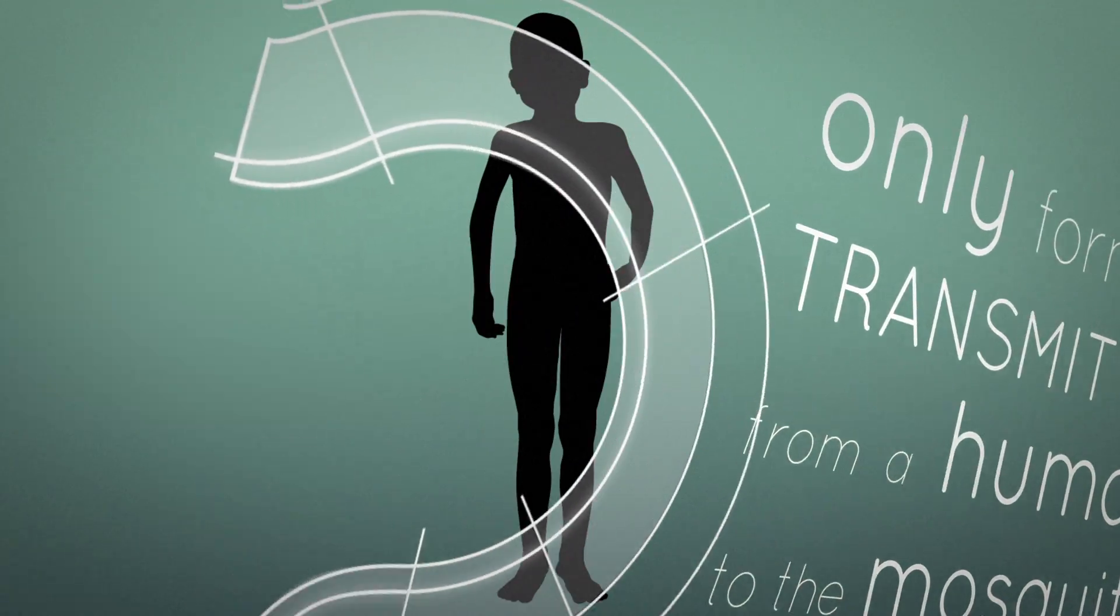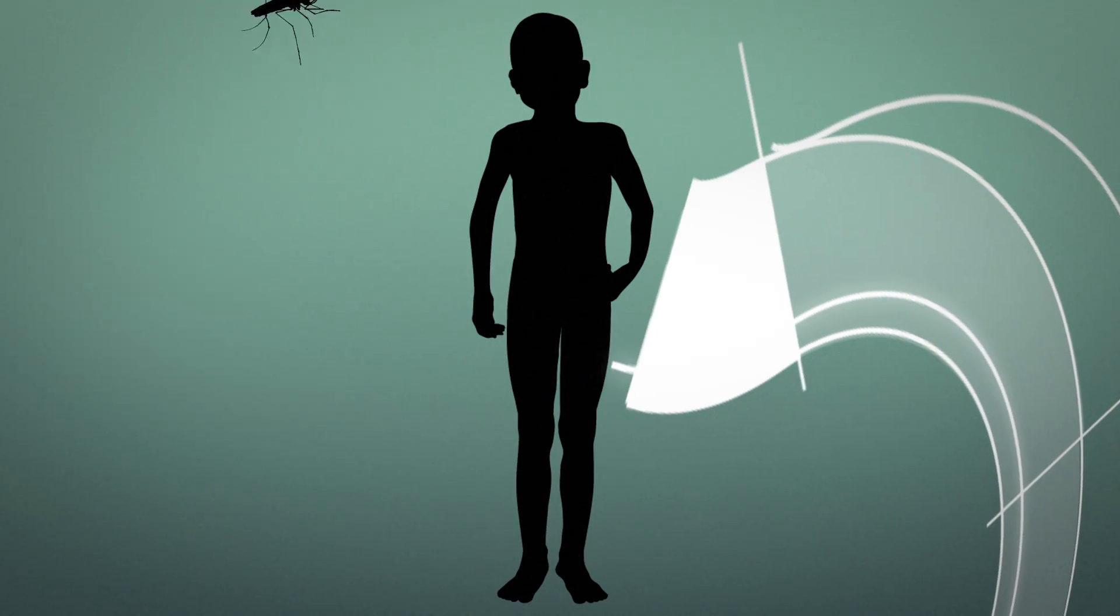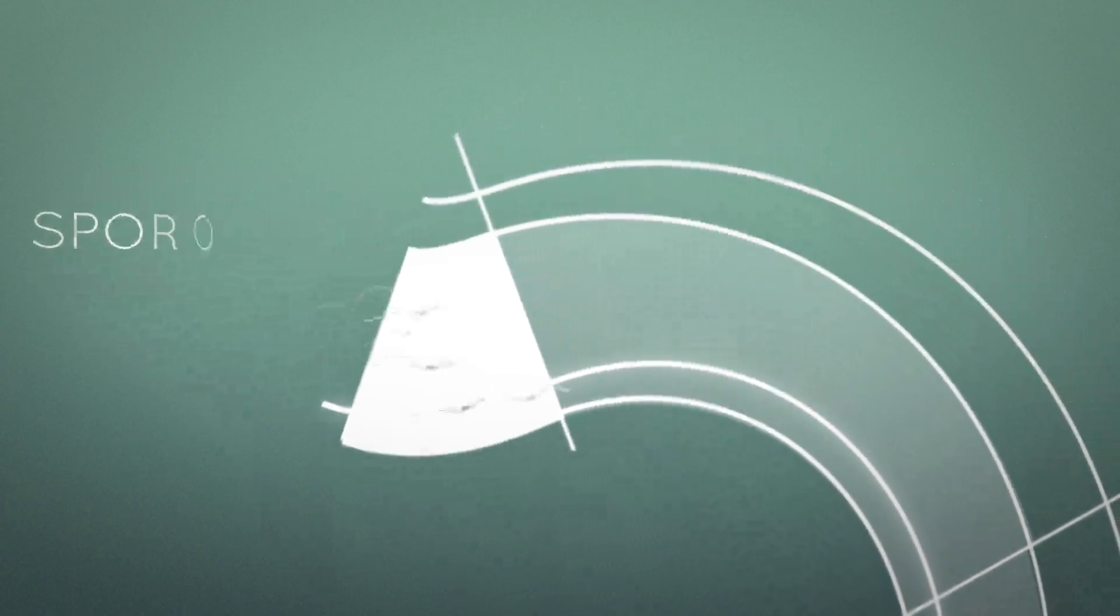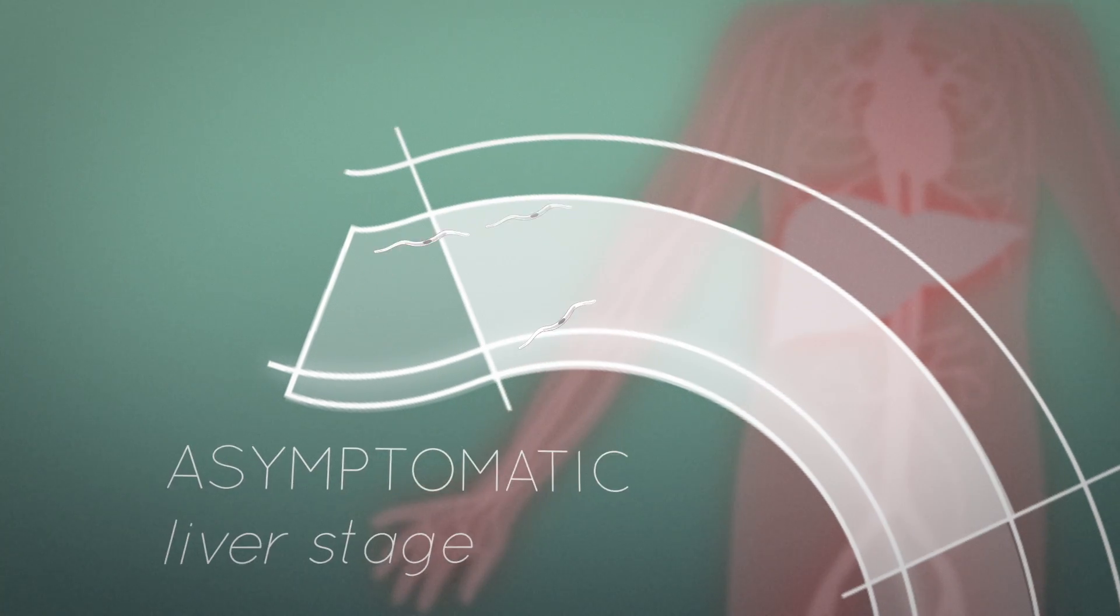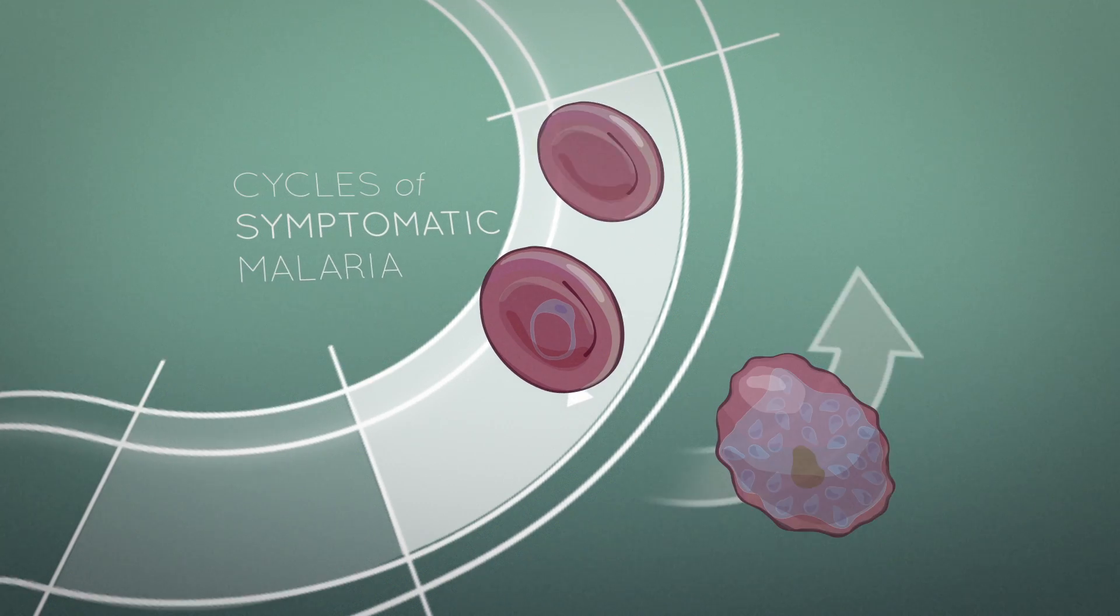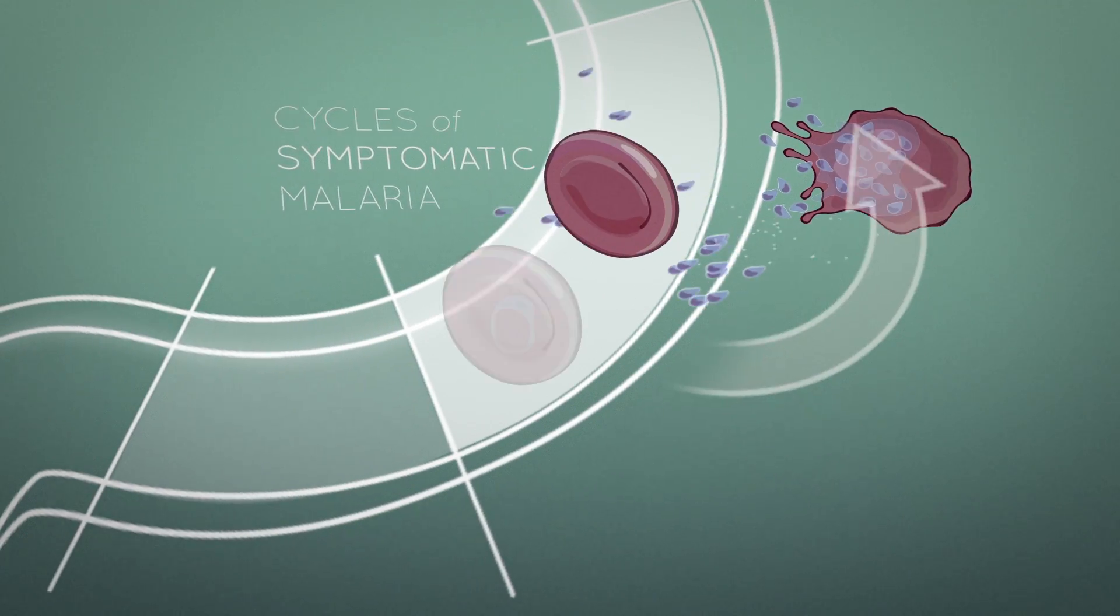Human infection is initiated by the bite of an infected Anopheles mosquito, wherein sporozoite stages are injected into the skin and then traffic in the bloodstream to the liver. Following liver stage development, thousands of merozoites are released into the blood to infect red blood cells.